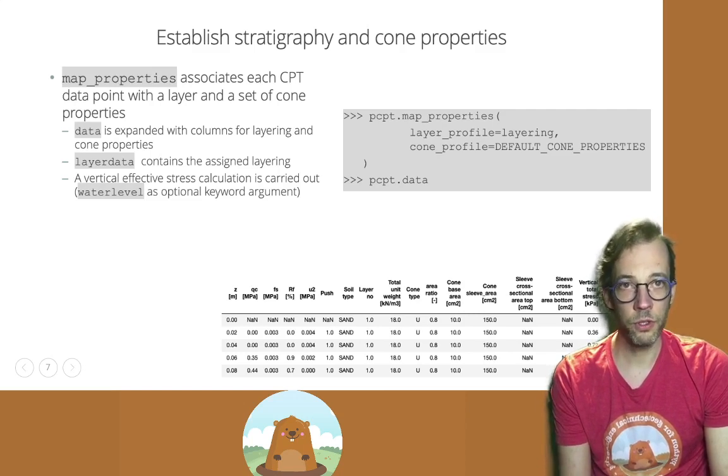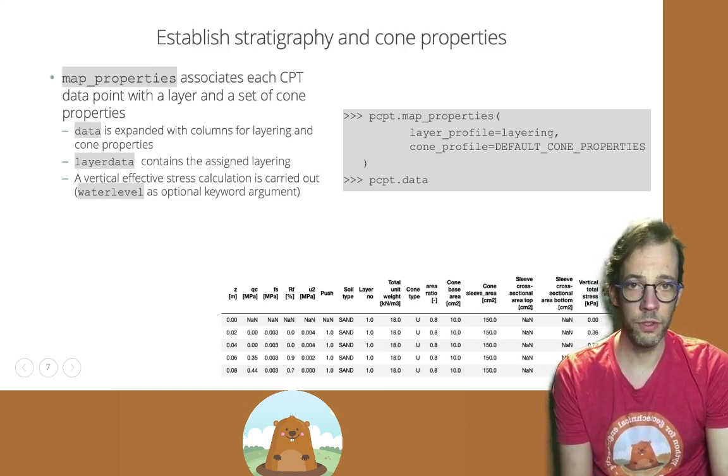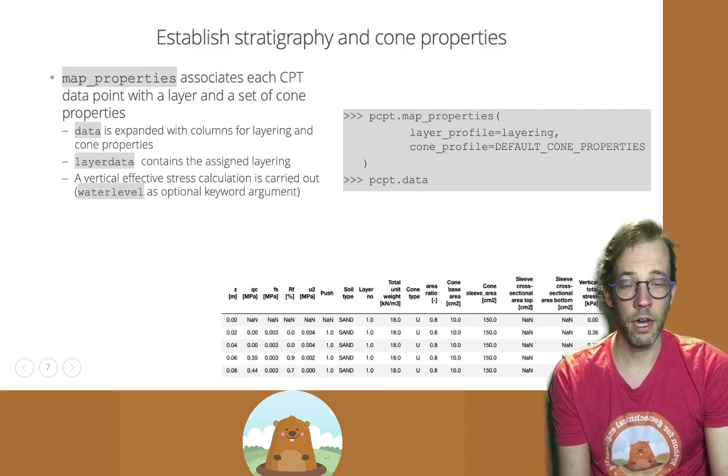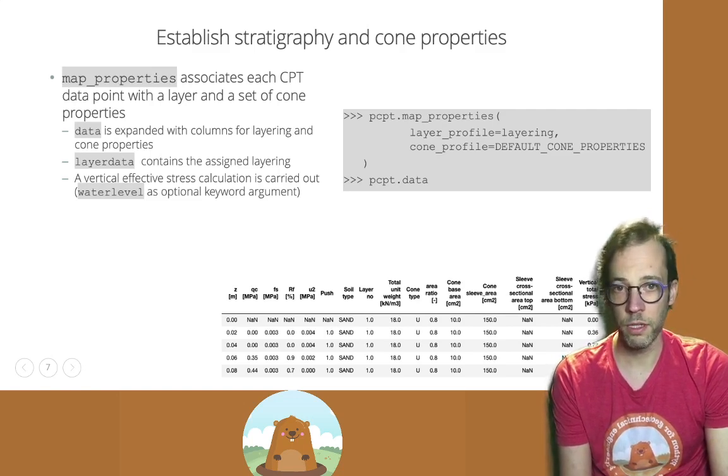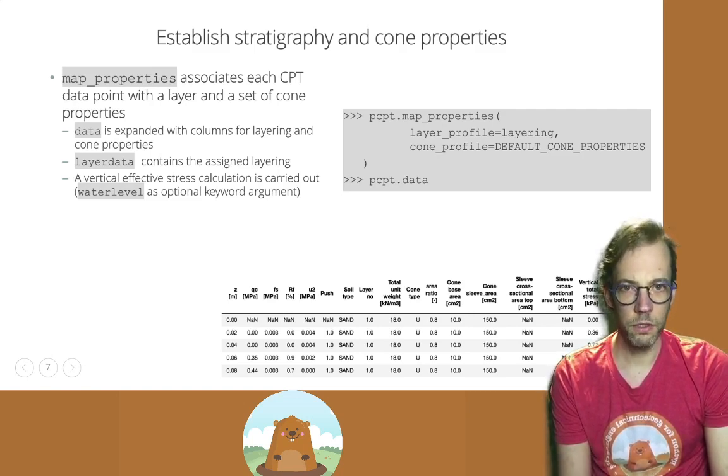In Groundhog, you also have a default for the cone properties. If you don't know what to use, you can use them. But I would recommend that you consult the logs or the CPT report to know exactly which cone properties you had.